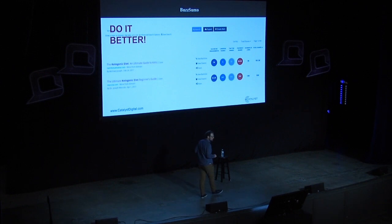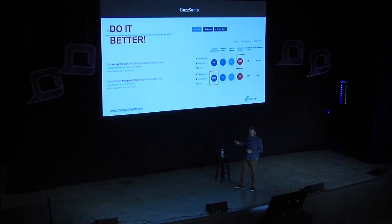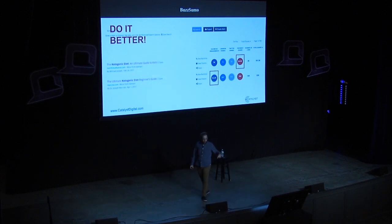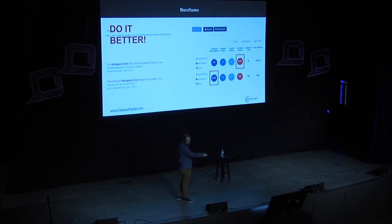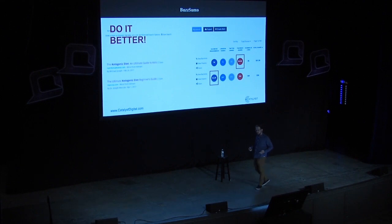These two examples are interesting. Looking at ketogenic diet, one got way more Facebook shares while the other got way more Pinterest shares. If you go through the articles to find out why, it's very simple — one just has way more images in it. So that's also something to consider while producing content: what are the little nuances that make content better for one network versus the other?